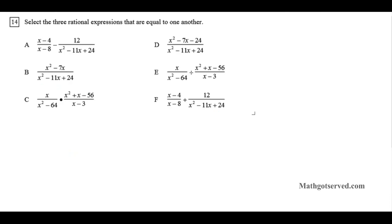Let's take a look at question 14. We need to select three rational expressions that are equal to one another. Inspecting all the options, some quadratic expressions repeat themselves. For example, x squared minus 11x plus 24 appears four times, and x squared plus x minus 56 also repeats. Let's factor the trinomials.